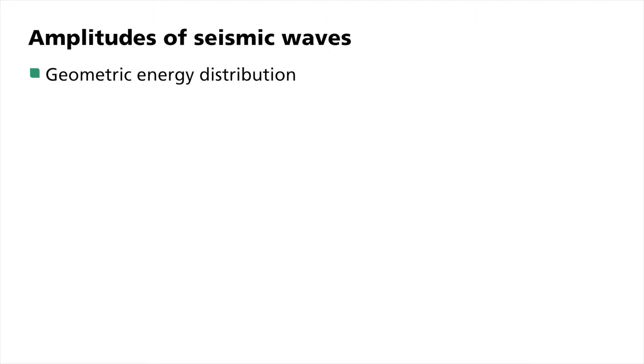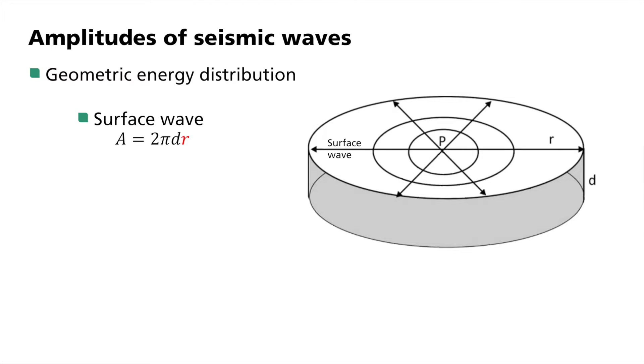This is due primarily to what we call geometrical spreading. This process describes the different forms of attenuation of both wave types along their path. Hence, surface waves are radiated two-dimensionally with a penetration depth d. Hence, their energy is distributed over a cylinder with a surface area of 2πdr, which means they attenuate linearly with distance.